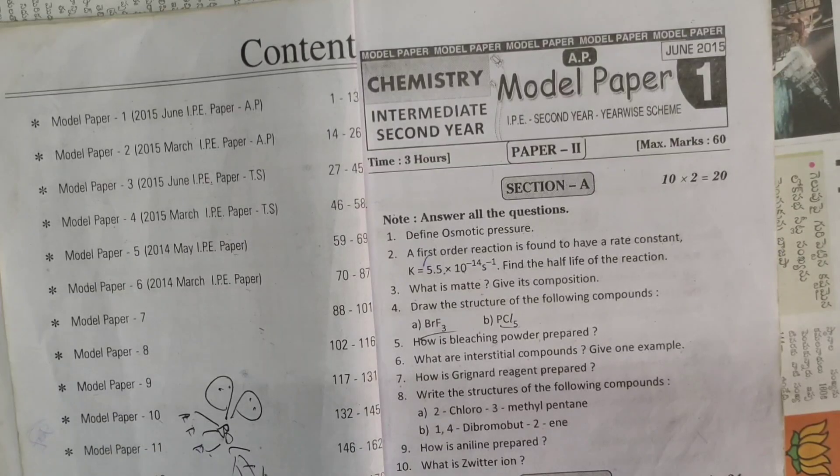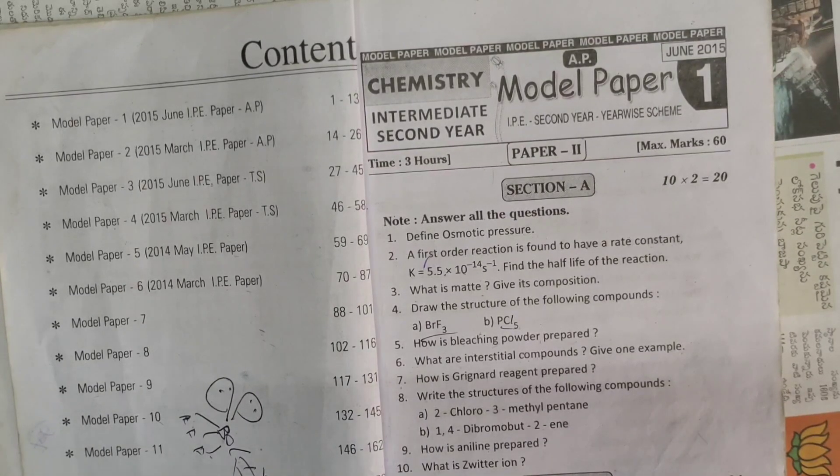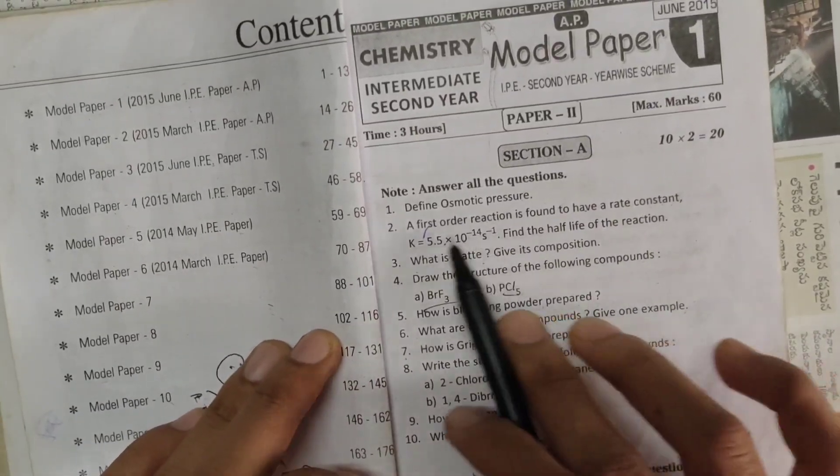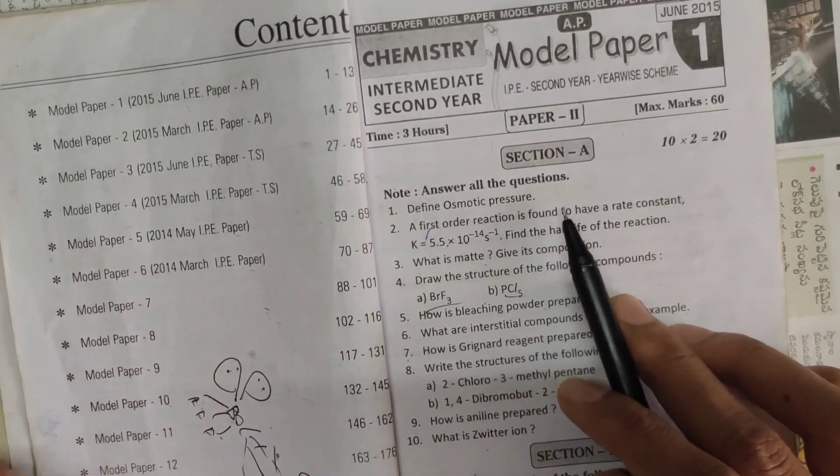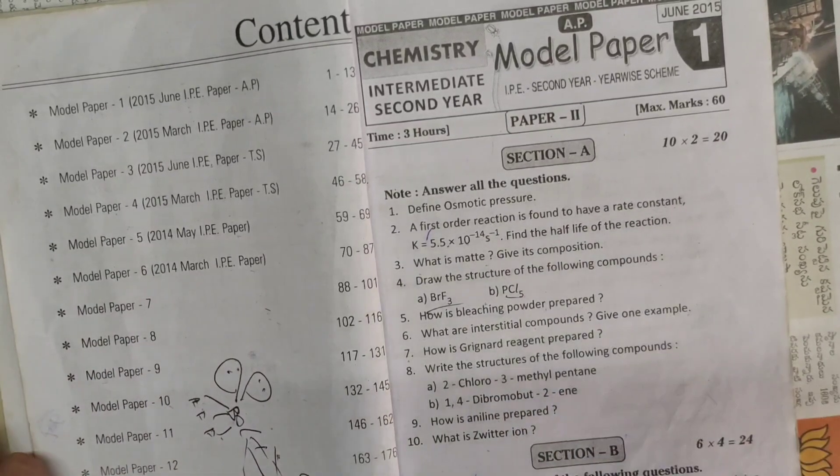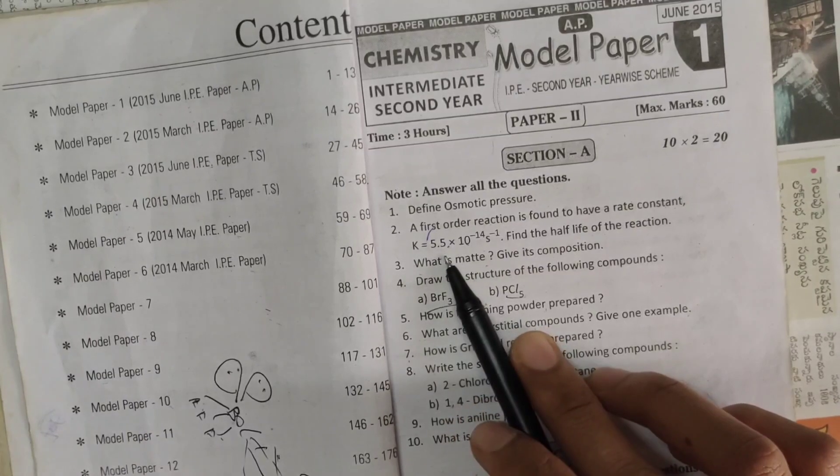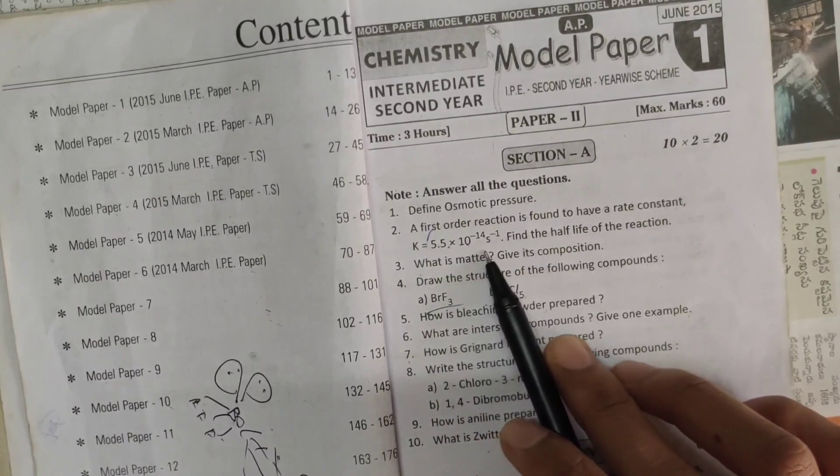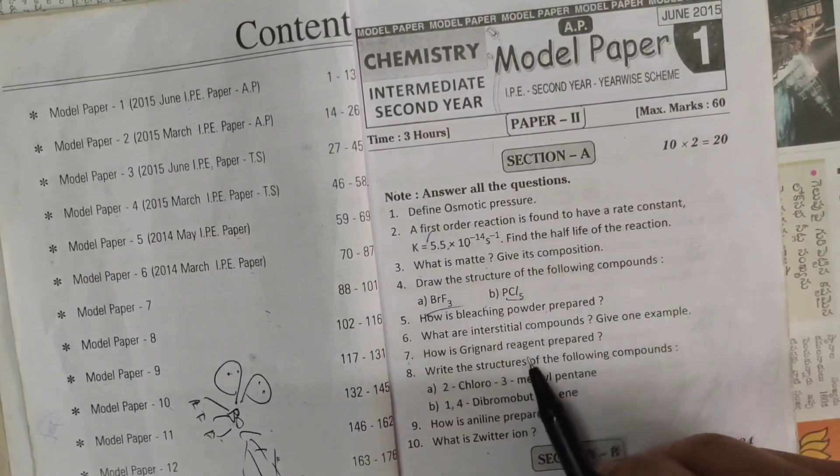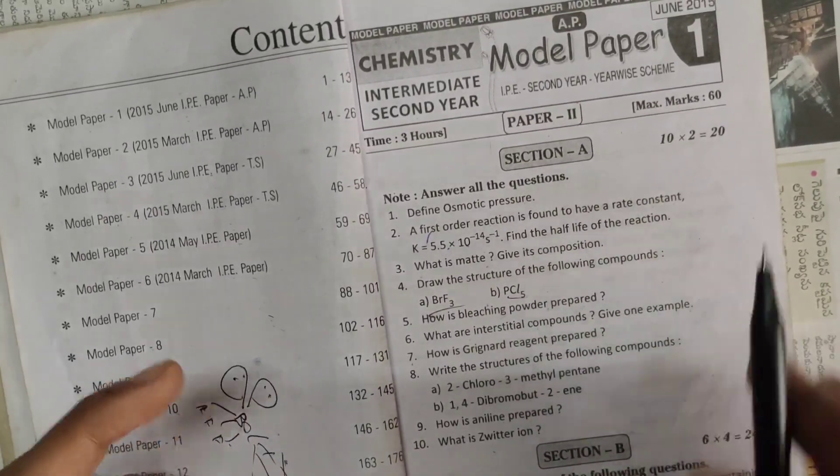I have questions here, which I have two mark questions. There are 10 questions here. First question: define osmotic pressure. And second question: a first order reaction is found to have a rate constant k equal to 5.5 into 10 power of minus 14 s inverse. Find the half-life of reaction. This is a problem.